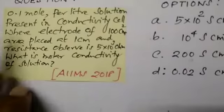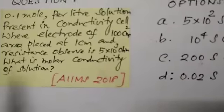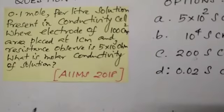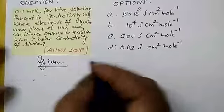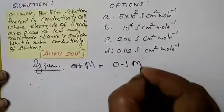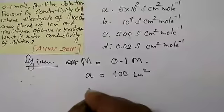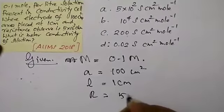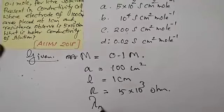This is a 0.1 mol per litre solution present in a conductivity cell where electrodes of 100 cm² area are placed 1 cm apart and the resistance observed is 5 × 10³ ohm. What is the molar conductivity of the solution? There are a lot of data. First, writing the given data: molarity M = 0.1 mol/L; electrode area A = 100 cm²; distance L = 1 cm; resistance R = 5 × 10³ ohm. They are asking for lambda M, the molar conductivity.